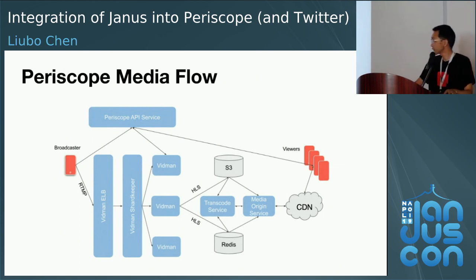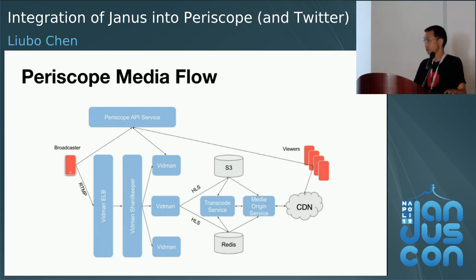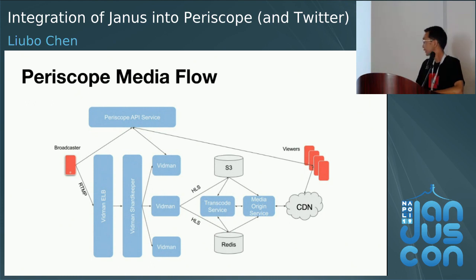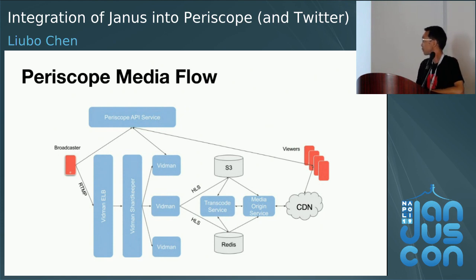In this architecture, the broadcaster interacts with viewers only via hearts and text comments, which is very limited. Motivated by Twitter's goal to get the public to converse as much as possible, we thought about getting viewers more involved in the broadcast — allowing them to call in. So we extended this architecture to support a hangout-style broadcast. If you want to add Janus, it should go right between the broadcaster and our Feedman ELB — that's where Janus fits.